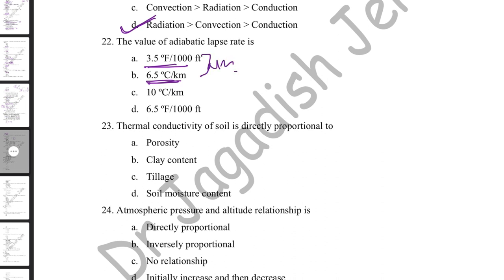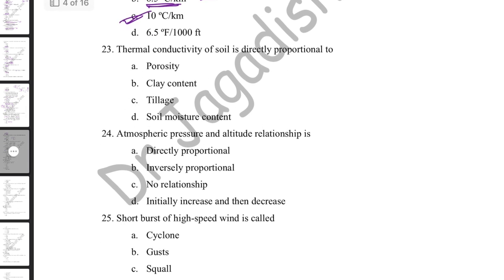Thermal conductivity of soil is directly proportional to soil moisture content. It is inversely proportional to porosity. Higher clay content means higher porosity, so clay content is also inversely related to thermal conductivity. Tillage increases porosity, reducing thermal conductivity. Therefore, soil thermal conductivity is directly proportional to moisture content.